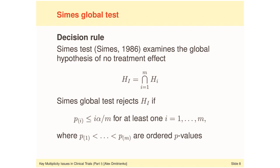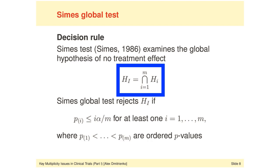Let us now compare the decision rule of the Bonferroni procedure with the decision rule of the Symes global test, which is a global testing procedure for testing the global null hypothesis H_I — defined as the intersection of the individual null hypotheses. For example, in a clinical trial with multiple dose-placebo comparisons, such as the type 2 diabetes trial used in example 4, the global null hypothesis corresponds to the question: is there a drug effect at any dose? The Symes procedure can be used to answer this question.